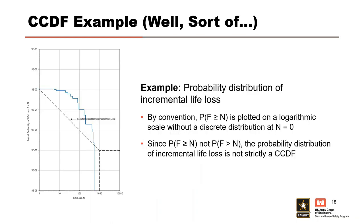The big FN chart is very close to being a CCDF, but it is not, because we are plotting the cumulative probability F of being greater than or equal to life loss N, not the probability of F being greater than N. It is probably better described as a mixed distribution, since there is a discrete probability of zero life loss — not plotted because of the log scale — and a continuous probability of life loss greater than zero.